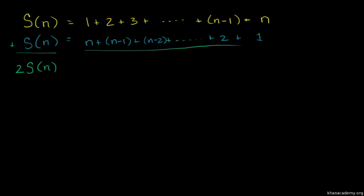Notice that 1 plus n equals n plus 1, and 2 plus n minus 1 also equals n plus 1. We see the pattern: each pair sums to n plus 1.